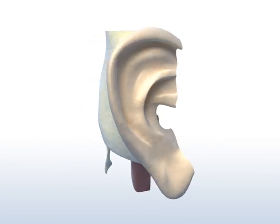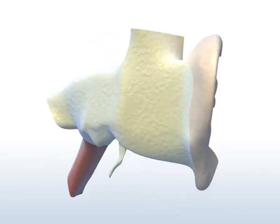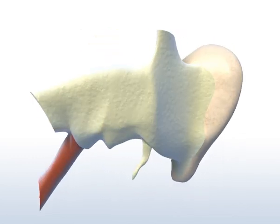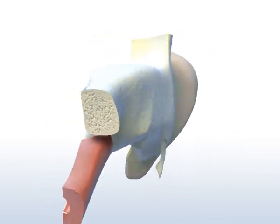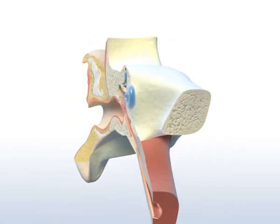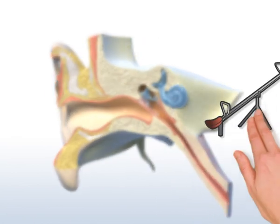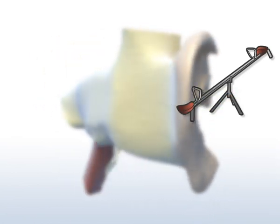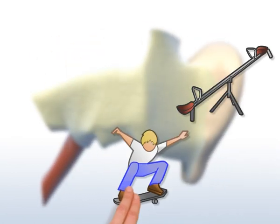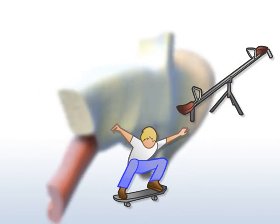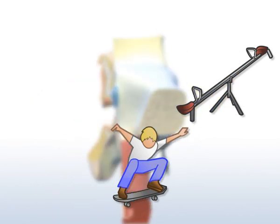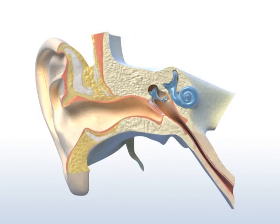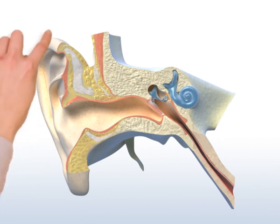The ear is not only a sense organ for picking up sounds. The ear also contains the organ of balance. It helps us to orientate ourselves in space and to direct complex movements. What you can see of the ear from the outside is only the simplest part.